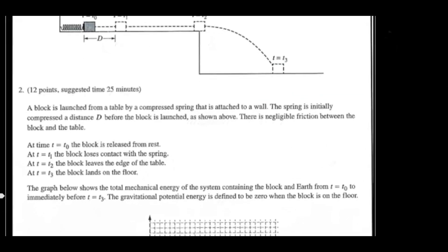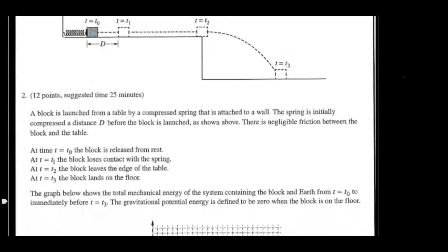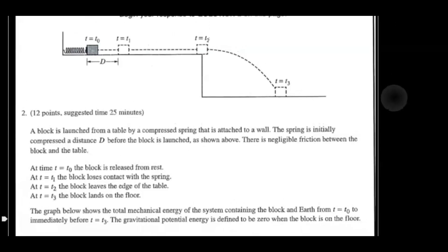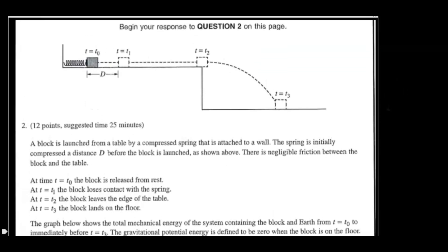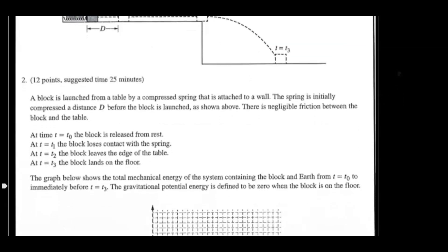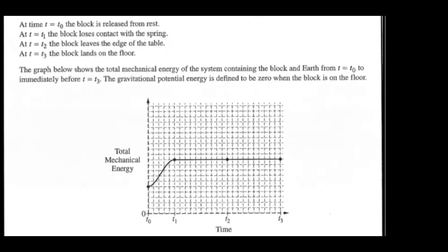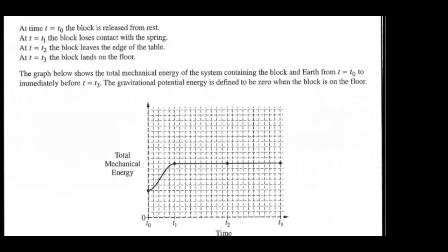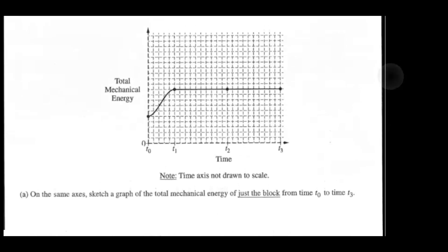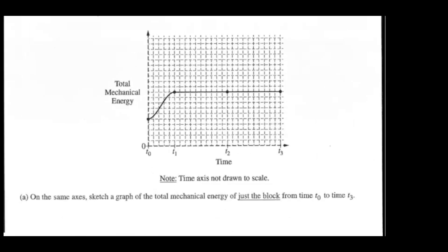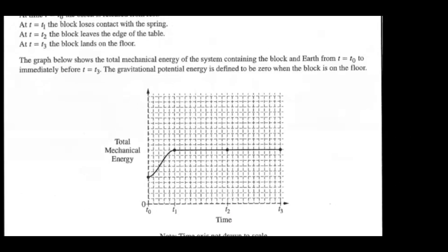So in this example, we have a block that is launched from a table from a compressed spring that's attached to the wall, and then it basically falls off the table and onto the ground. The graph below that they give us is the total mechanical energy represented over time. What they want us to do here — it says on the same axis, sketch a graph of the total mechanical energy of just the block from time 0 to time 3. So let's break this down.